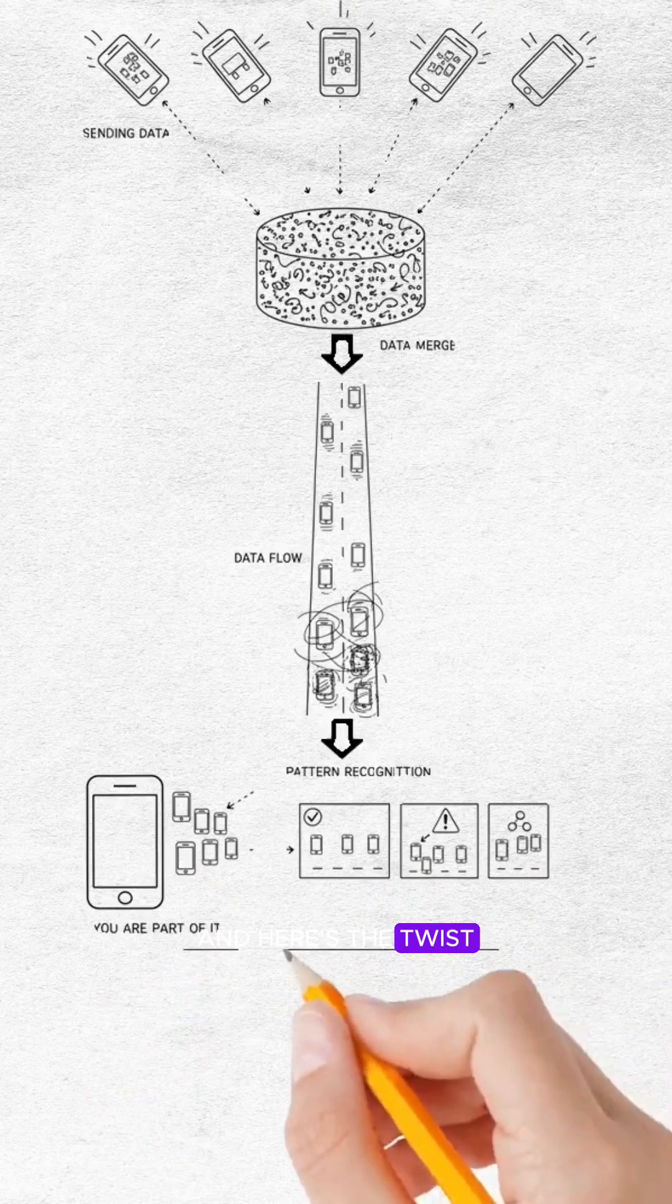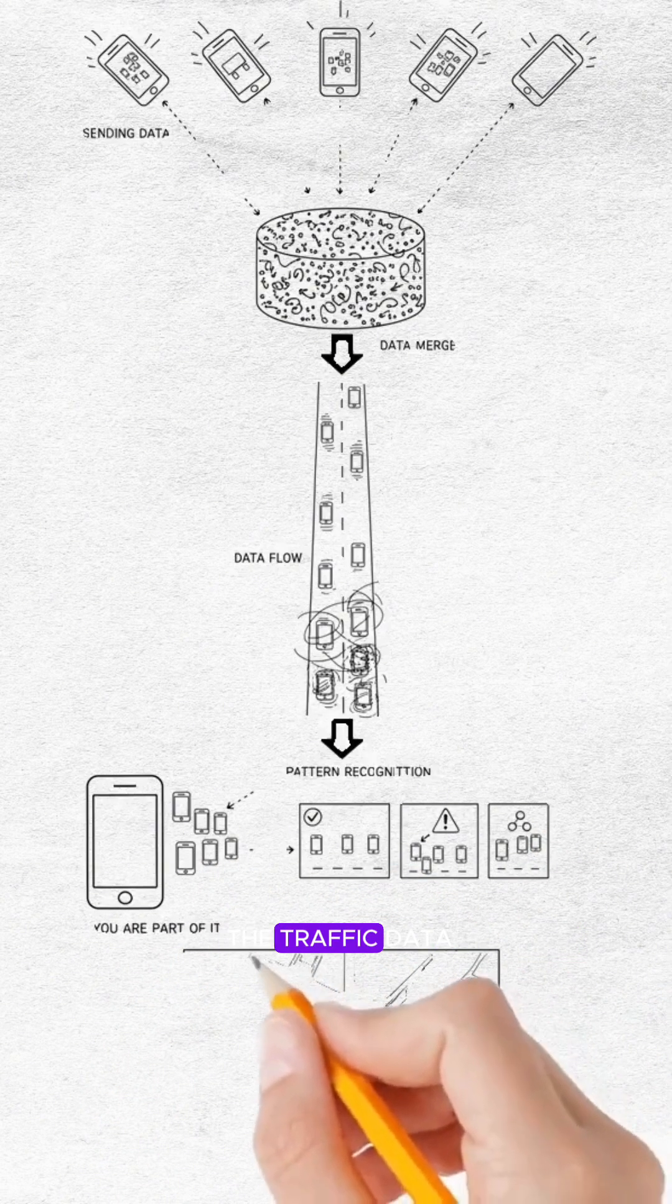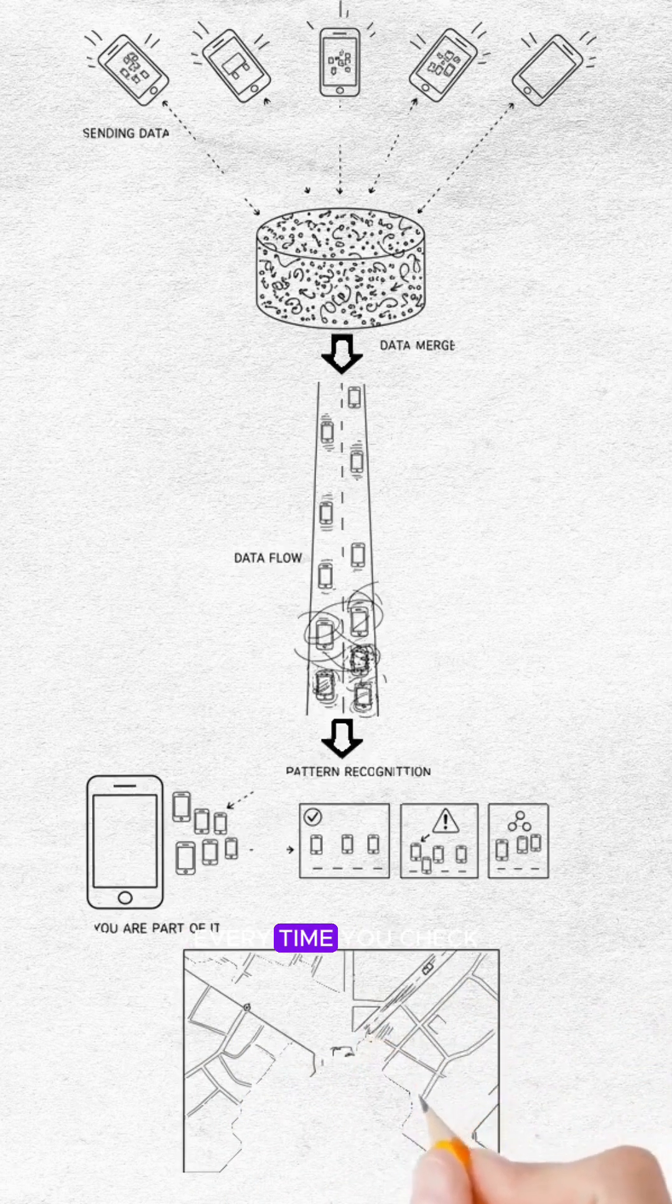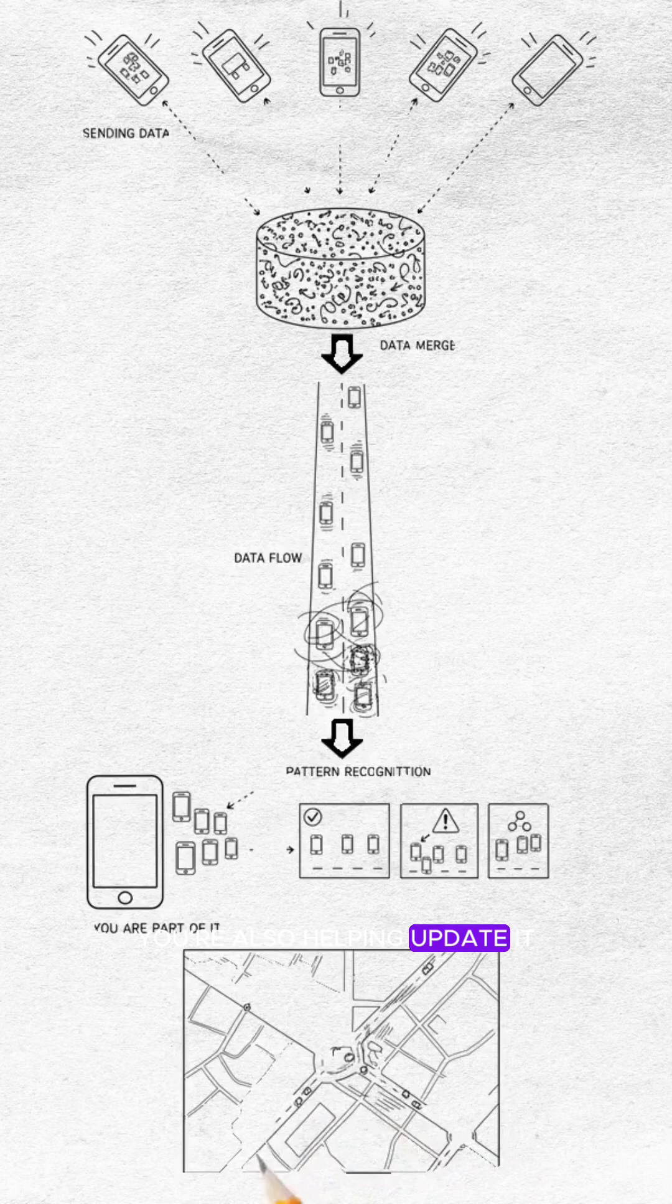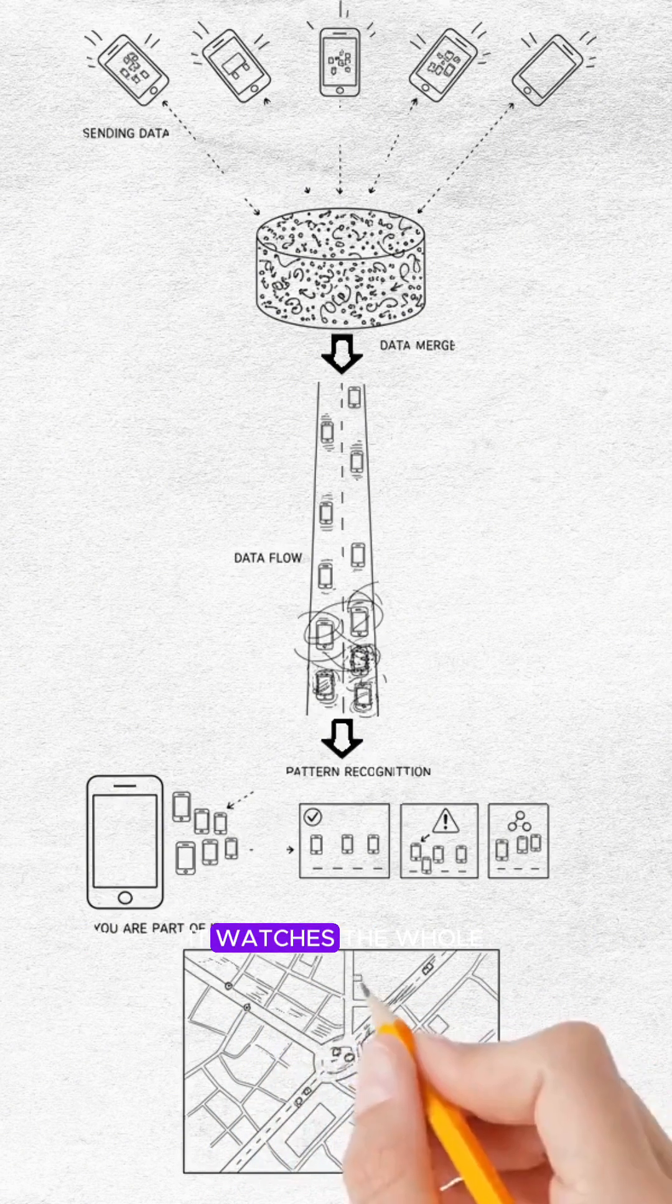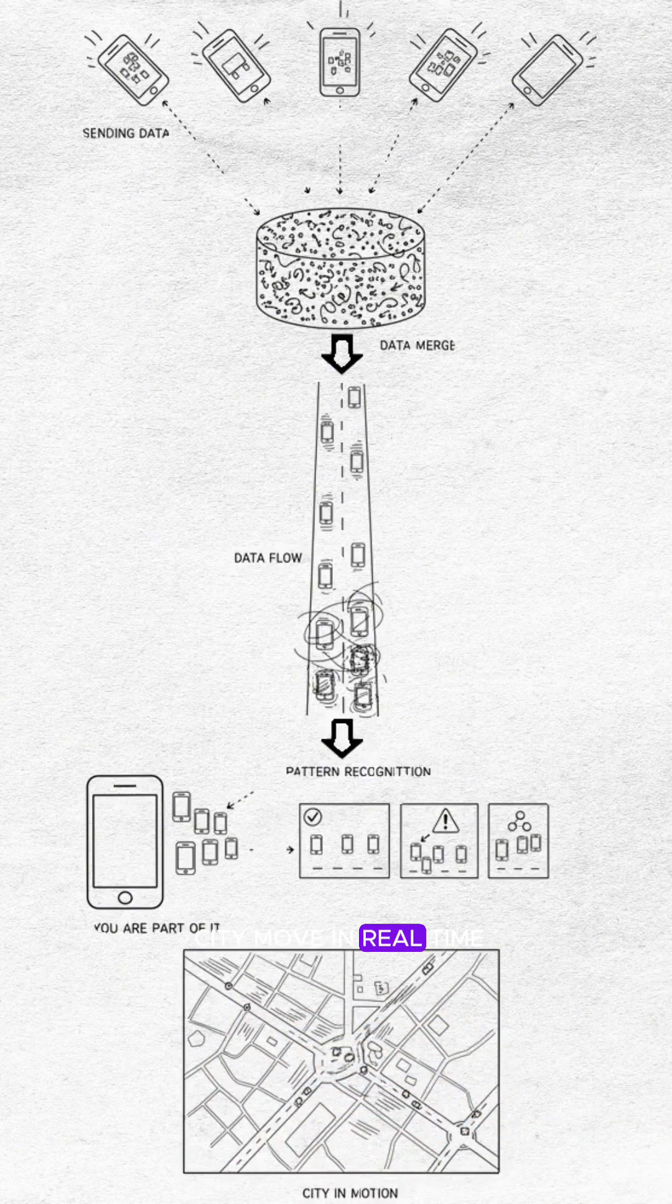And here's the twist. You're not just using the traffic data. You're part of the traffic data. Every time you check the map, you're also helping update it. Google Maps doesn't predict traffic. It watches the whole city move in real time.